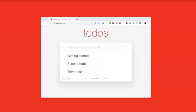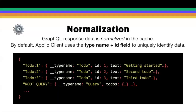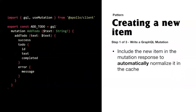It's a good idea to understand how data is normalized and what it looks like in the cache. By default, Apollo Client uses the __typename and ID fields to uniquely identify data. What you're looking at here is a printed version of what the cache looks like internally when we fetch all these to-dos. It's relevant to know how the cache works because it'll affect us when we write mutations.